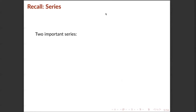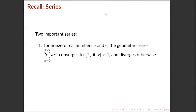Now we will be talking about two important series for this topic and succeeding topics. First, the geometric series. For all non-zero real numbers a (the first term) and r (the common ratio), the geometric series a times r^n converges with sum a over (1 minus r) if the absolute value of the common ratio is less than 1. If the absolute value of the common ratio is greater than 1, then the geometric series diverges.